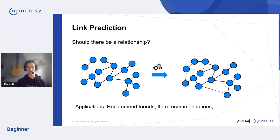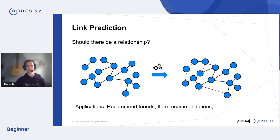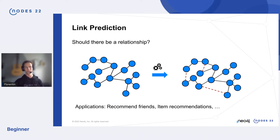Since this is a beginner talk, let me give a short introduction to what link prediction actually is. When you have a graph with nodes and links — also called relationships — you might want to know what relationships will exist in the future, or data that likely already exists but hasn't been captured yet. That process of discovering new relationships is link prediction.